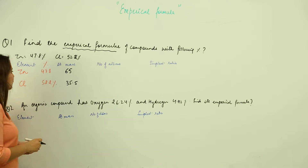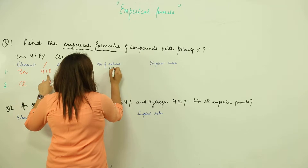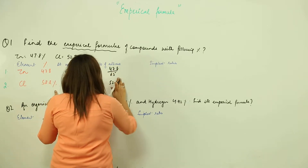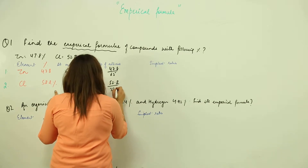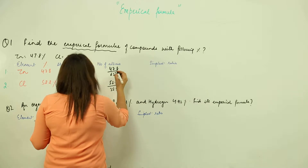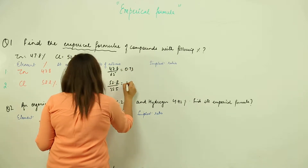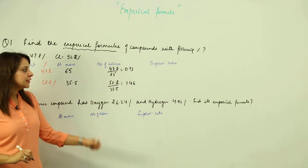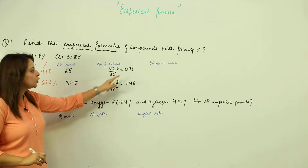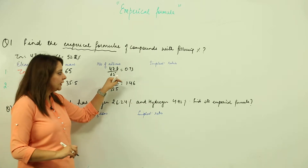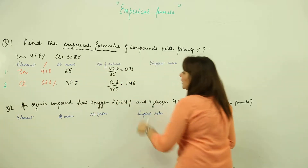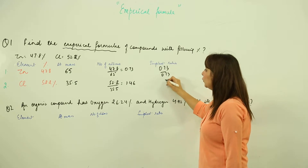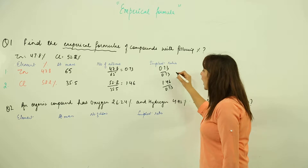To calculate the number of atoms, divide the percentage by the atomic mass. For zinc: 47.8 ÷ 65, and for chlorine: 52.2 ÷ 35.5, giving 0.73 and 1.46. To find the simplest ratio, divide both by the smallest value, which is 0.73.